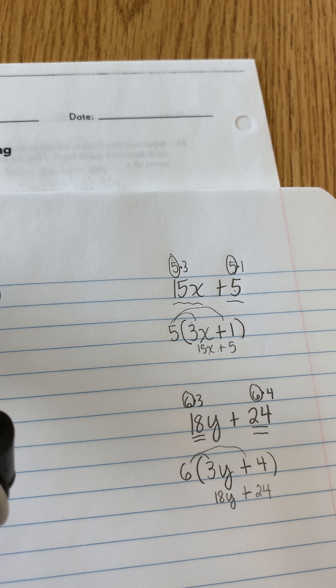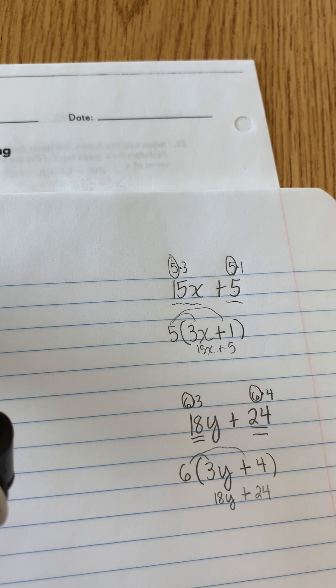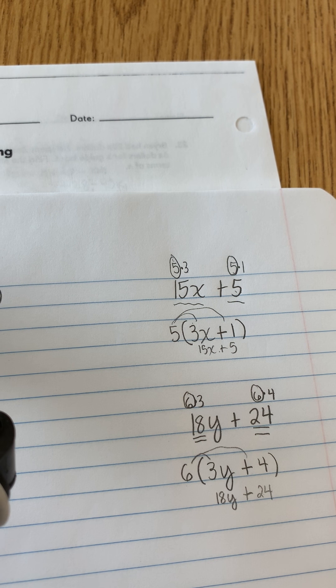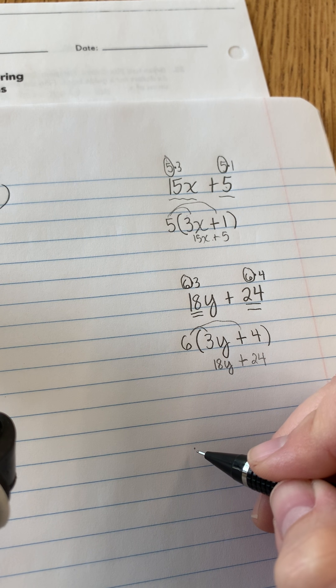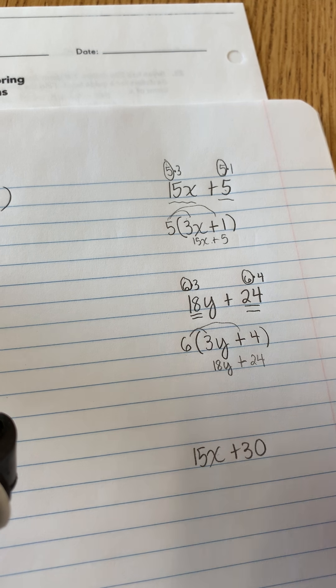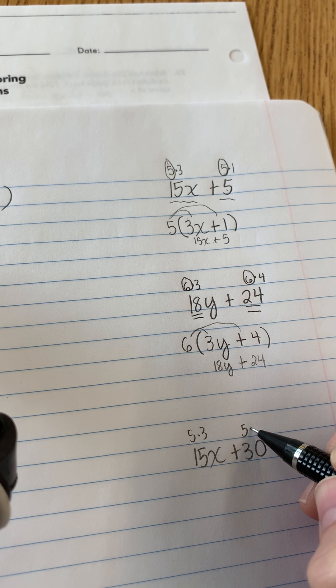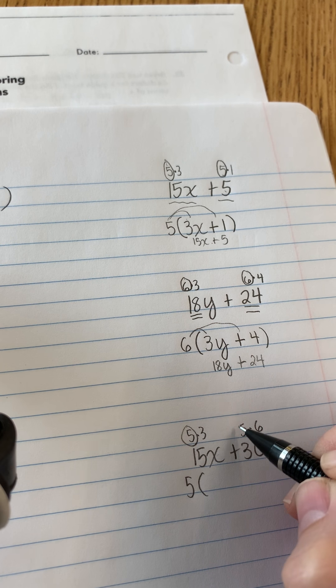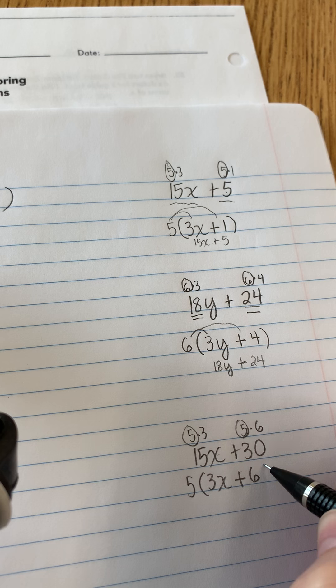Sometimes you may not do the greatest common factor. And it is important that you do the greatest common factor. If you don't, it's not in completely factored form. So let's say you've got like 15x plus 30. And you say, okay, I can factor out a 5. So this would be 5 times 3, and this would be 5 times 6, right? So then you factor out the 5. Factor that out. 3 is left. So it'd be 3x plus 6 is left.